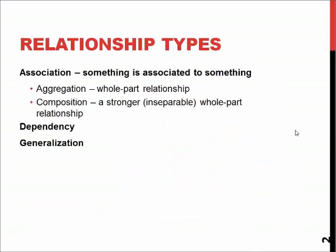There are basically several types of relationships in UML. The association, meaning that something is associated with something, has basically two different but related types of relationships: aggregation and composition.